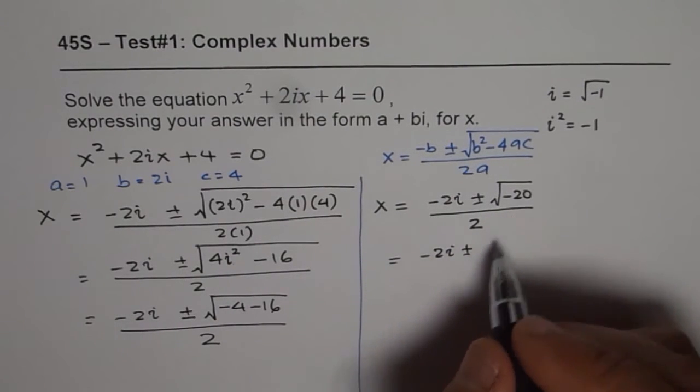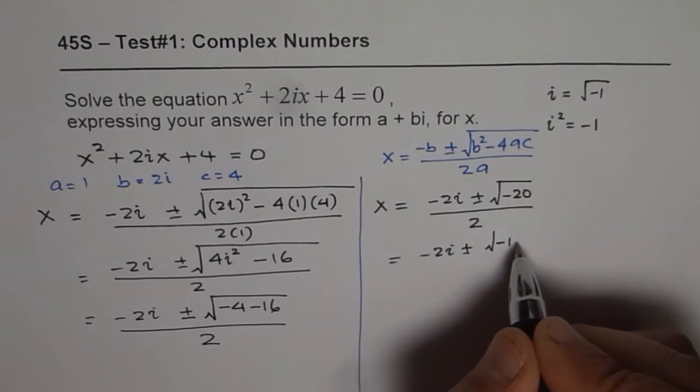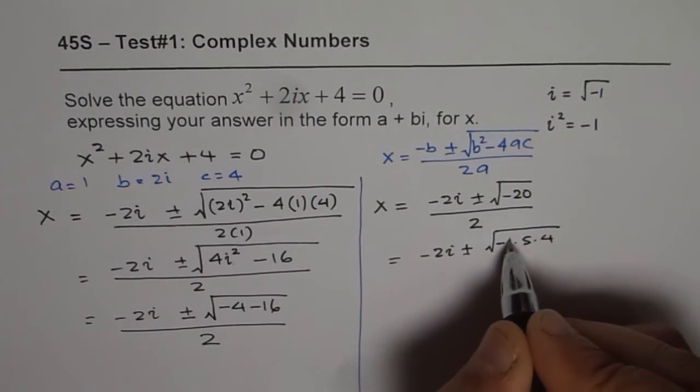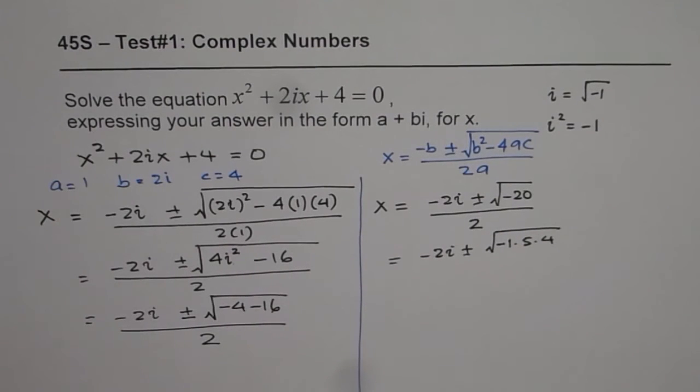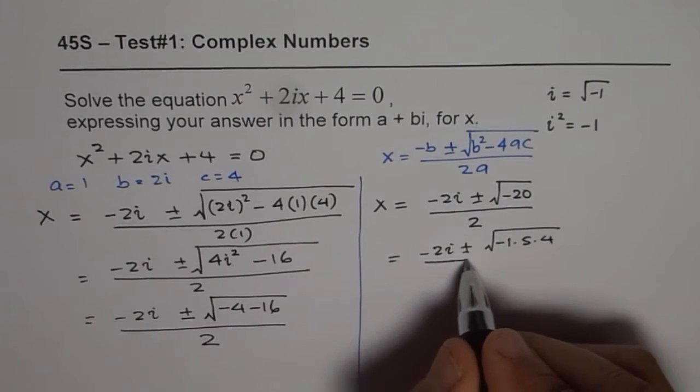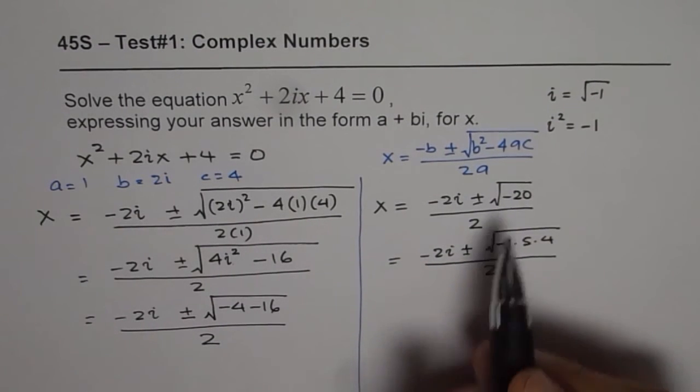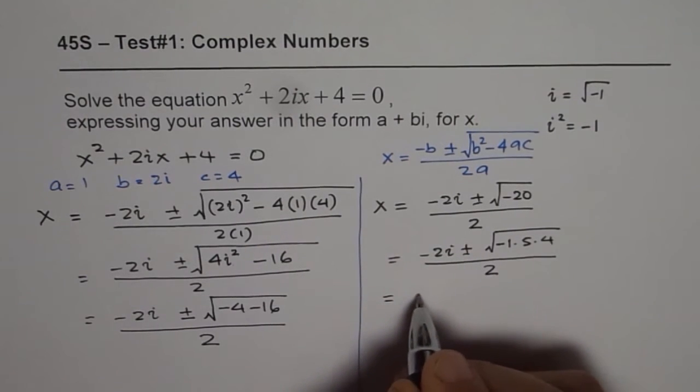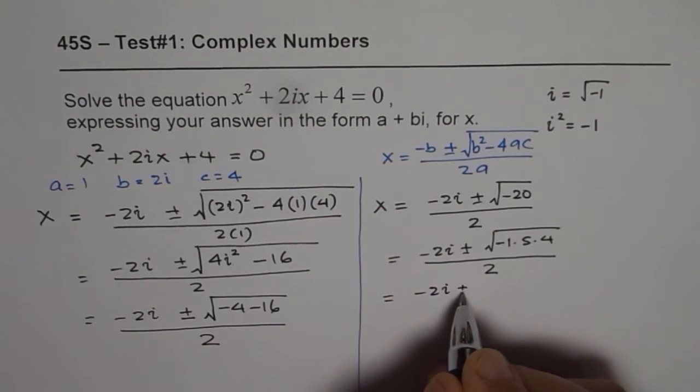20 could be written as 5 times 4. So we have minus 5 times 4 for 20. This is minus 1. So I'm writing them separated so that you understand how we are simplifying the next step. So minus 1 times 5 times 4.